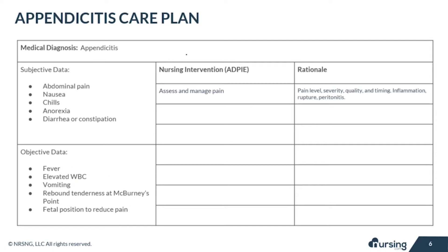Now let's look at our nursing interventions for appendicitis. You will assess and manage your patient's pain levels. It's important to look at the level, severity, quality, and timing of the pain, because these can all indicate different things on what's going on. Severe pain from that inflammation that suddenly goes away can indicate that the appendix has ruptured.